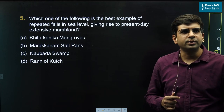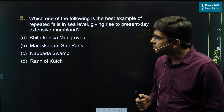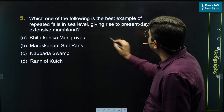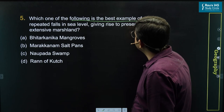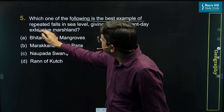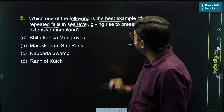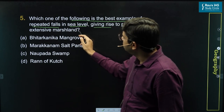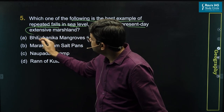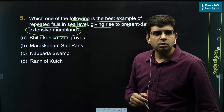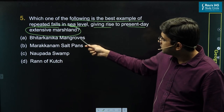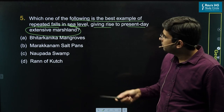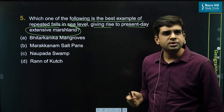Let's look at question number five of this year's present paper. The question is asking which of the following is the best example of repeated falls in sea level giving rise to present day extensive marshland. So the question is asking which of the following is an extensive marshland that has developed because of the fall in sea level.